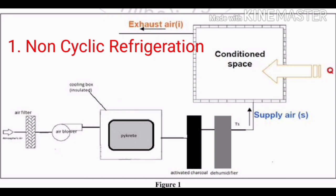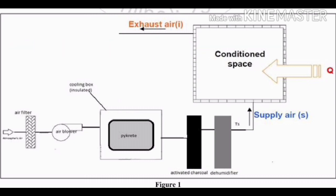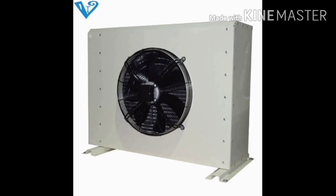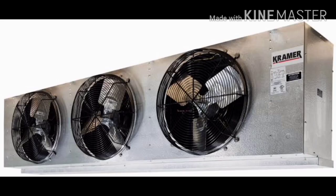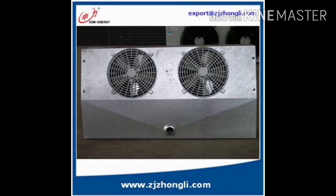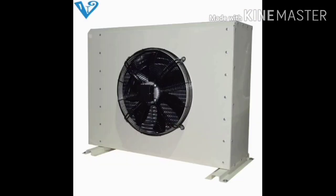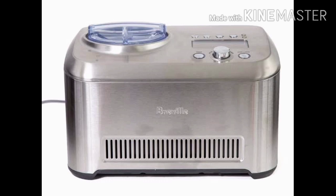In the non-cyclic refrigeration method, a contained area cools by melting ice or by sublimating dry ice. Perhaps the simplest example of this is a portable cooler where items are placed in it and ice is poured over the top. Regular ice can maintain temperature near but not below the freezing point, unless salt is used to cool the ice down further, as in a traditional ice cream maker.